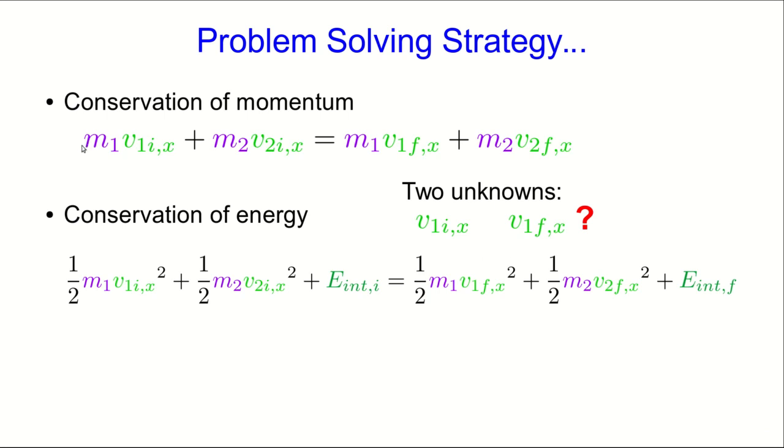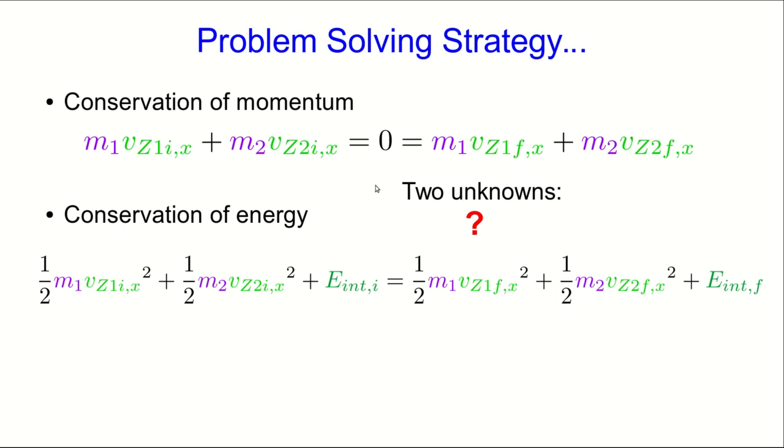The point is that we have conservation of momentum and conservation of energy, so if we have two unknowns, we can solve the two equations for the two unknowns. But it's messy, unless you transform into the center of mass frame. And then the fact that the total momentum is zero makes the solution easier.